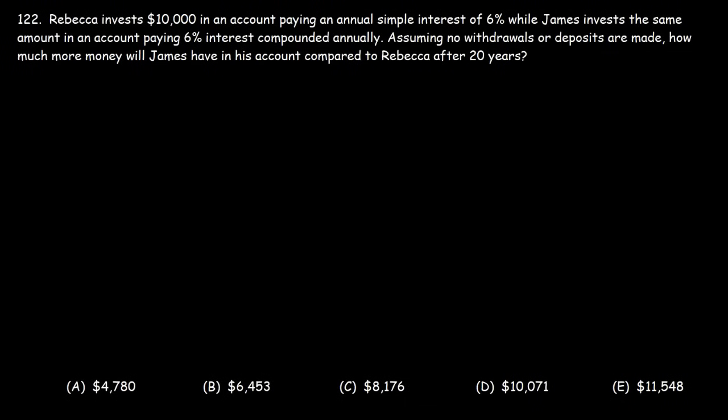Rebecca invests $10,000 in an account paying an annual simple interest of 6%, while James invests the same amount in an account paying 6% interest compounding annually. Assuming no withdrawals or deposits are made, how much more money will James have in his account compared to Rebecca after 20 years?